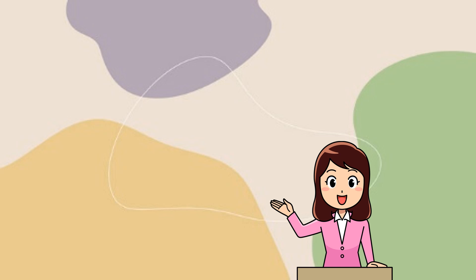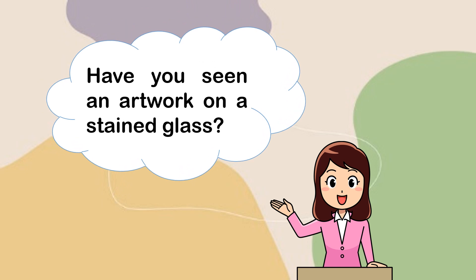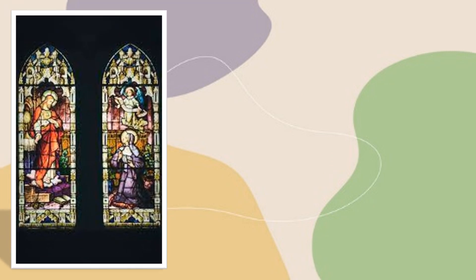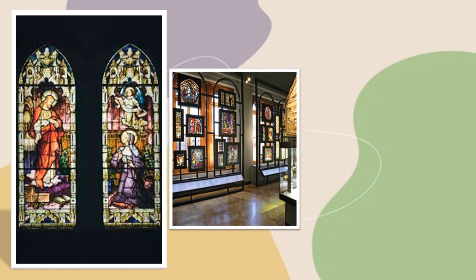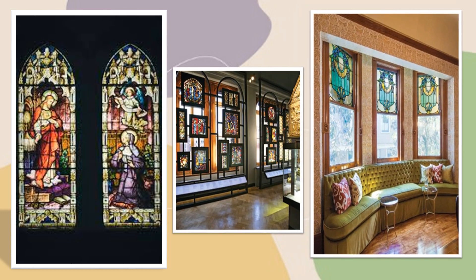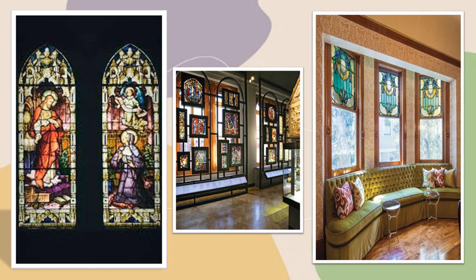And now, we are ready for a new lesson. Have you seen an artwork on a stained glass? Stained glasses are seen in churches, art museums, and even in some houses. The design on stained glasses is achieved through the use of glasses with various colors and hues.